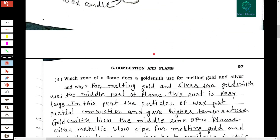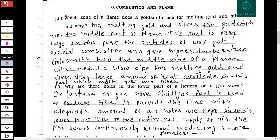The fourth question: which zone of a flame does a goldsmith use for melting gold and silver, and why? For melting gold and silver, the goldsmith uses the middle part of the flame. In this part, the particles of wax undergo partial combustion and give a higher temperature. The goldsmith blows the middle zone of the flame with a metallic blowpipe, as a very large amount of heat is available in this part, which melts gold and silver.